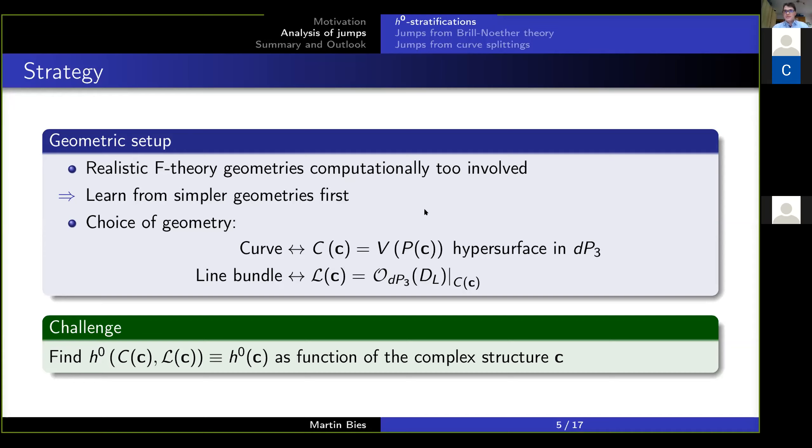We take our beloved surface dP3. The curves are just hypersurfaces in the dP3, so given as the zeros of one polynomial, and the bundles we take as restrictions from the dP3, so that we have a nice parameterization of the line bundles in question. Now our question is, can we actually find the number of sections of this bundle on the curve C as a function of the complex structure of the curve C?